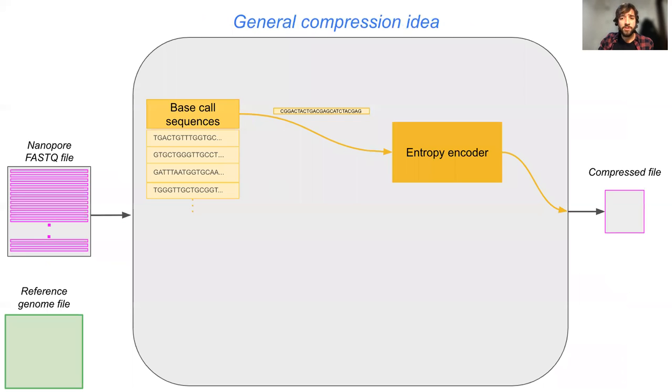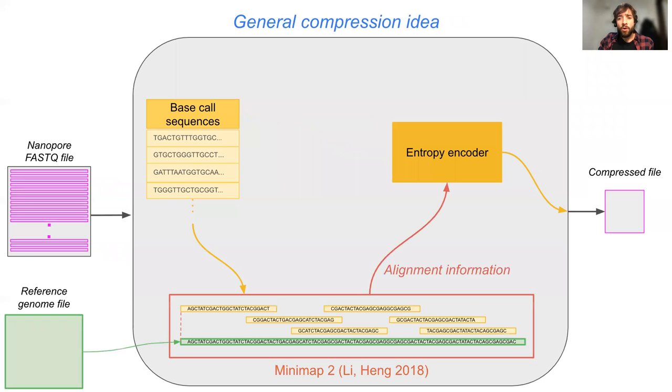The general idea behind both compression schemes is the following. Instead of directly encoding the base call sequences to the compressed file with a basic entropy encoder, we use the reference genome to align the base call sequences. And then, we encode large portion of each as a series of alignments to the reference. We do this because usually the alignments can be described more compactly than the original sequences.